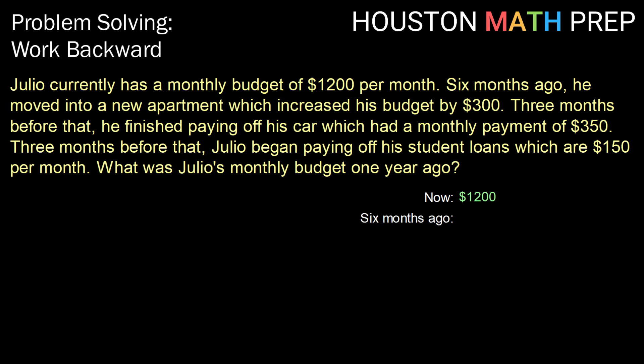The first change that we're told about happened six months ago. He moved into a new apartment, which increased his budget by $300. An increase would typically mean add, but since we're working backwards, we're going to subtract that out. That means that six months ago, his monthly budget would have been $900.